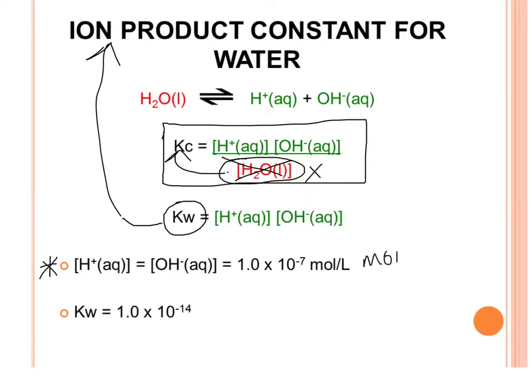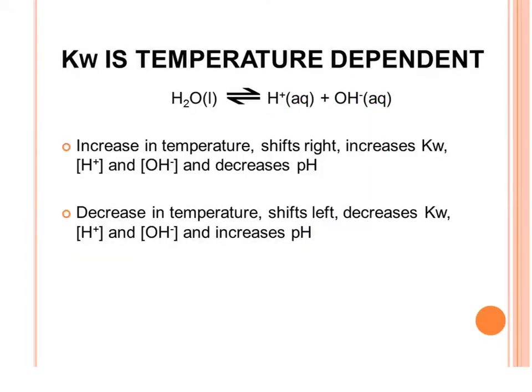Or in IB units, moles per decimeter cubed. That means if we plug these values into our Kw expression, we would get a Kw of 1.0 × 10⁻¹⁴.